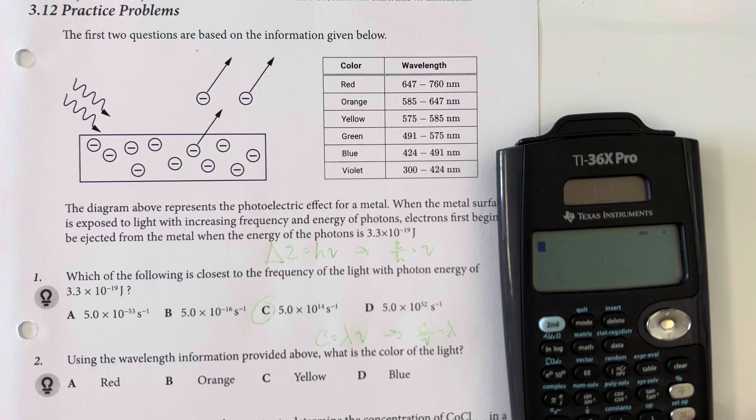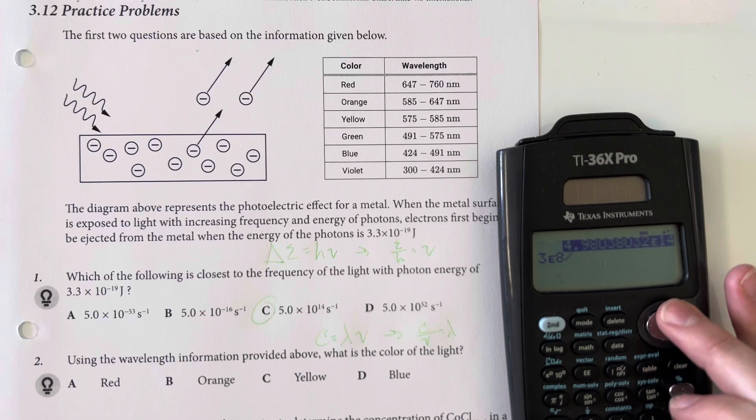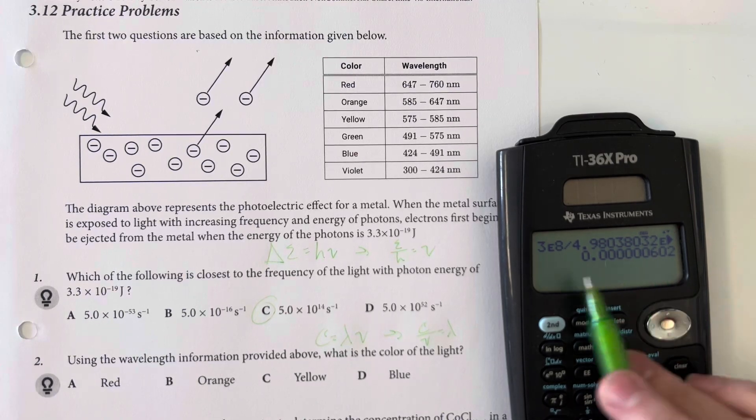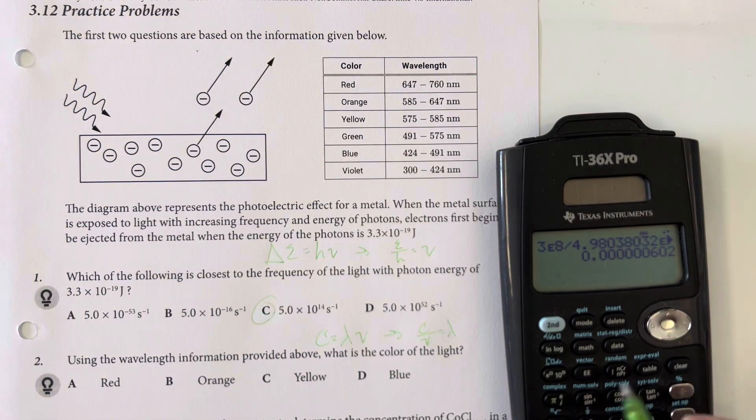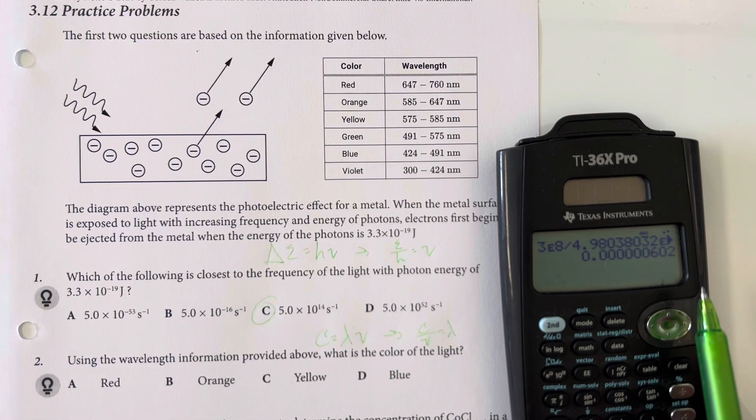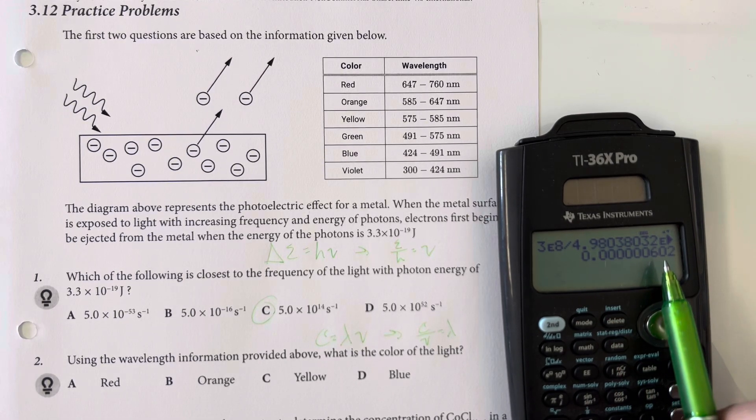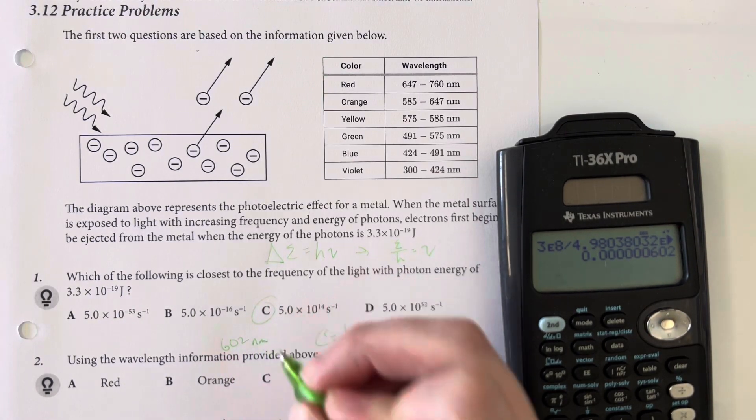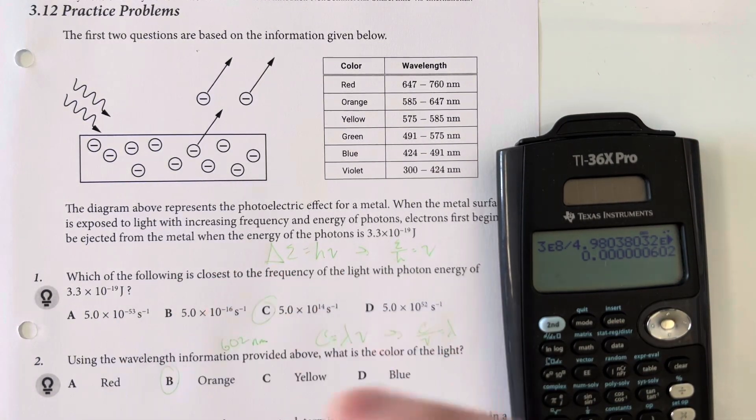So the speed of light that we are dealing with is 3 times 10 to the 8th. And then we will just be dividing it by our frequency here. That is going to originally give it to us in meters. We need this to be in nanometers, which means we're going to move the decimal over 9 times. So that's going to give us 602 nanometers. And the 602 gives us the color of orange.